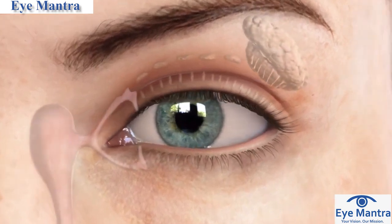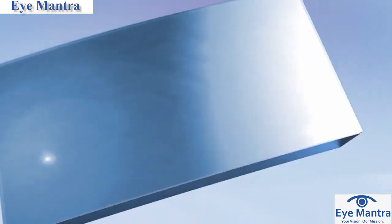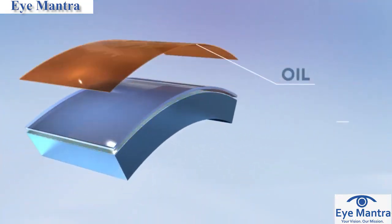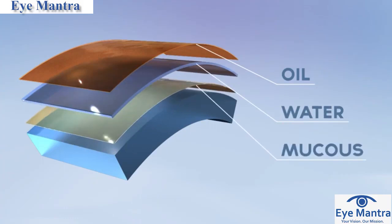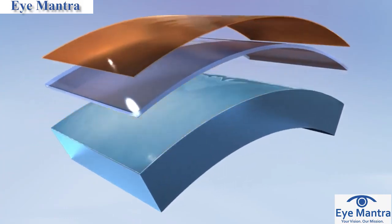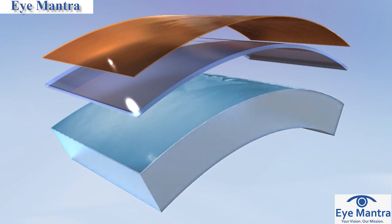Our tears are formed by tiny glands that surround the eye. Tears are comprised of three layers: oil, water, and mucus. The lower mucus layer serves as an anchor for the tear film and helps it adhere to the cornea.